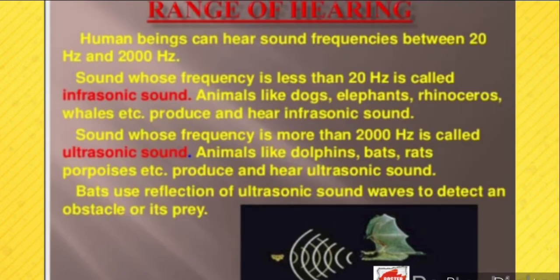Regarding the range of hearing: human beings can hear sound frequencies between 20 Hz and 20,000 Hz. Sound whose frequency is less than 20 Hz is called infrasonic sound — animals like dogs, elephants, rhinoceros, and whales produce and hear infrasonic sounds. Sound whose frequency is more than 20,000 Hz is called ultrasonic sound — animals like dolphins, bats, rats, and porpoises hear ultrasonic sounds.